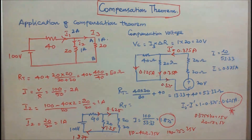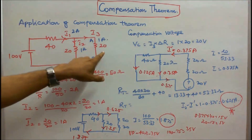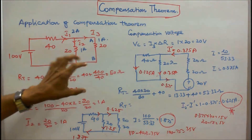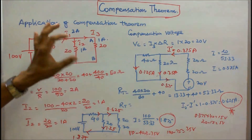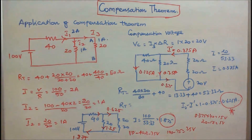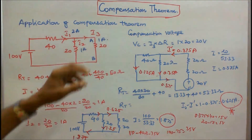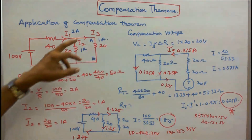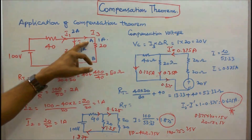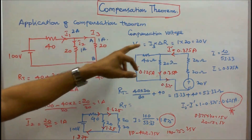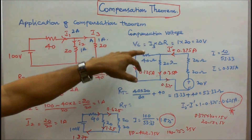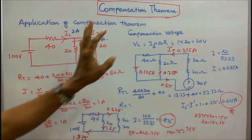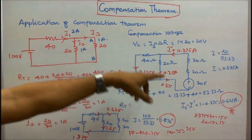Next, I am going to add a 20 ohm resistor in branch AB, so delta R equals 20. I can find the compensation voltage: Vc equals I3 times delta R. I3 equals 1 amp, and delta R is 20, so 1 times 20 equals 20 volts. The compensation voltage is 20 volts.